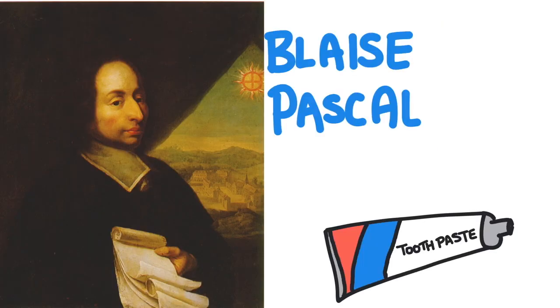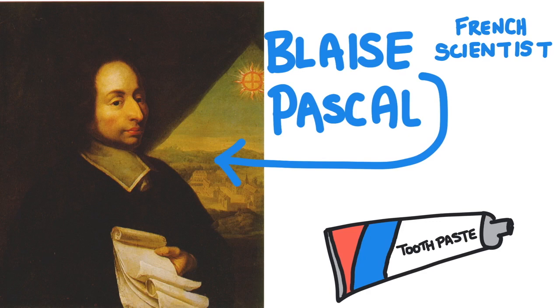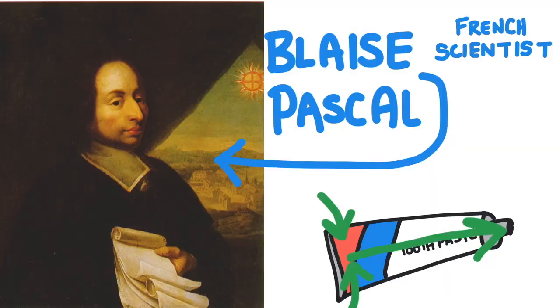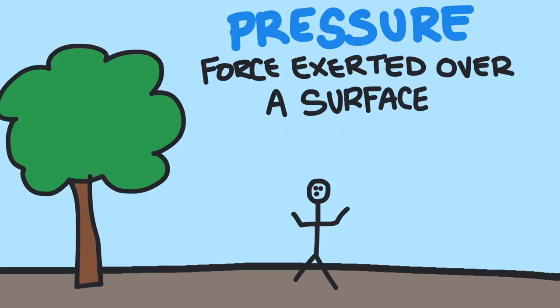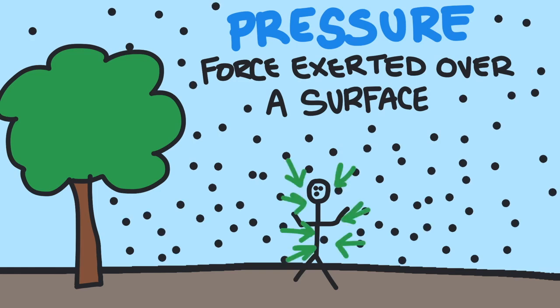Pascal's principle is named after the French scientist Blaise Pascal, who discovered that an applied pressure can be transmitted throughout a fluid. Pressure is a force that's exerted over a surface. As an example, air pressure is the force of all the individual air particles colliding with an object from all sides.